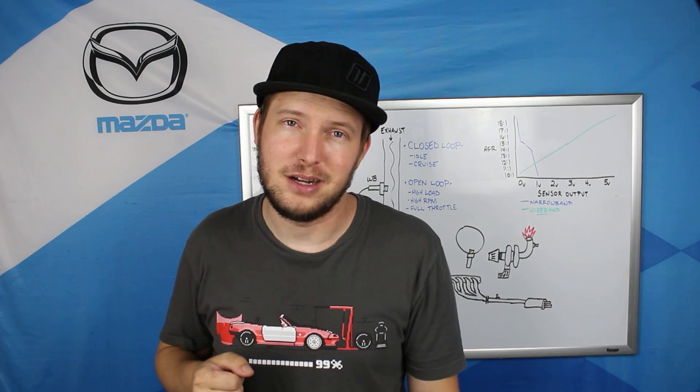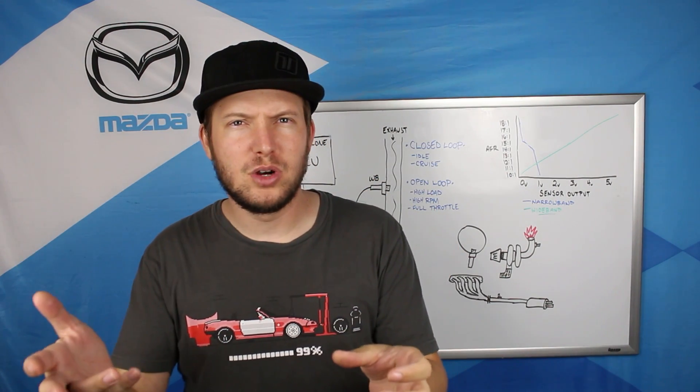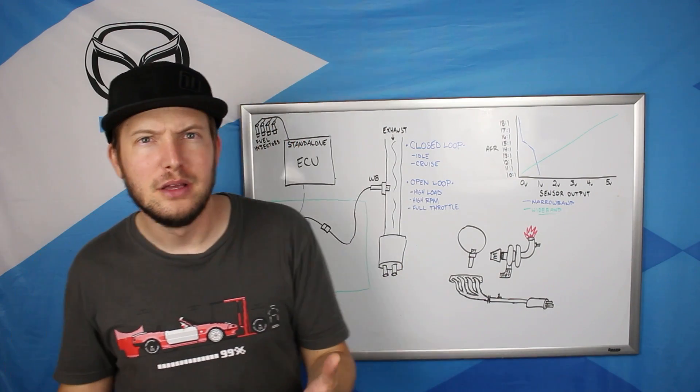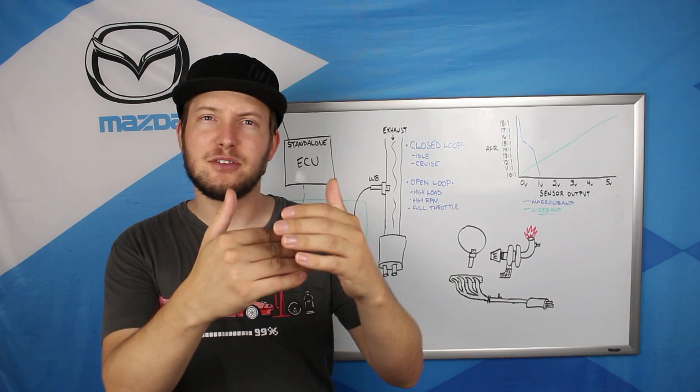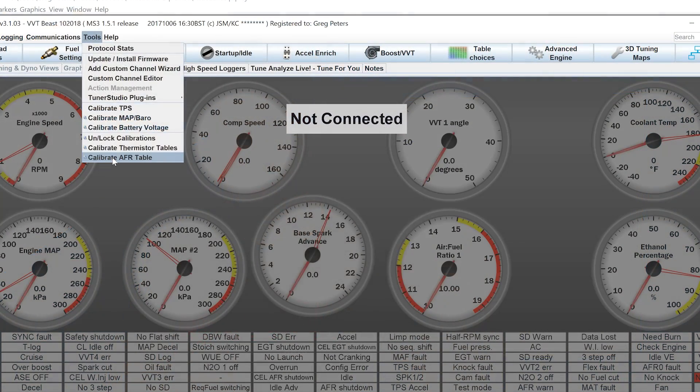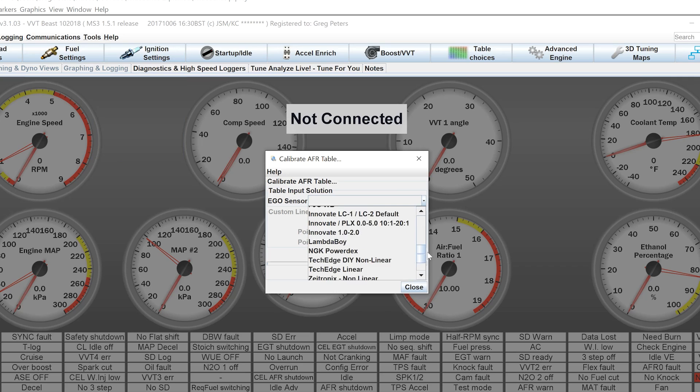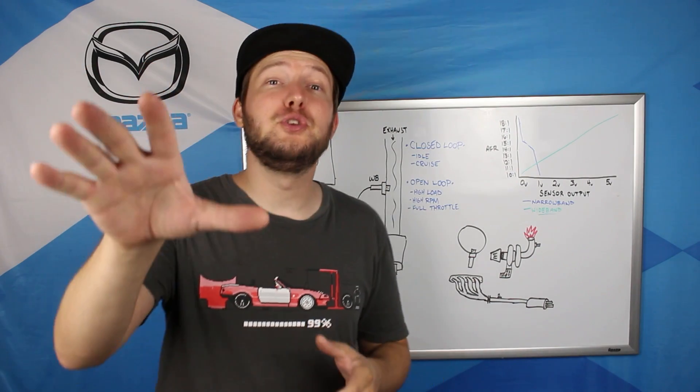So that's a possible issue there. Next thing is the wideband gauge and the tuning software read two different AFRs. Now this can be a couple of things as well. Number one, most tuning softwares are going to let you select from a list of widebands and yours may or may not be on that list. But if it's not on that list, you can also do a custom wideband calibration. And I will link a video I made on how to do that below.